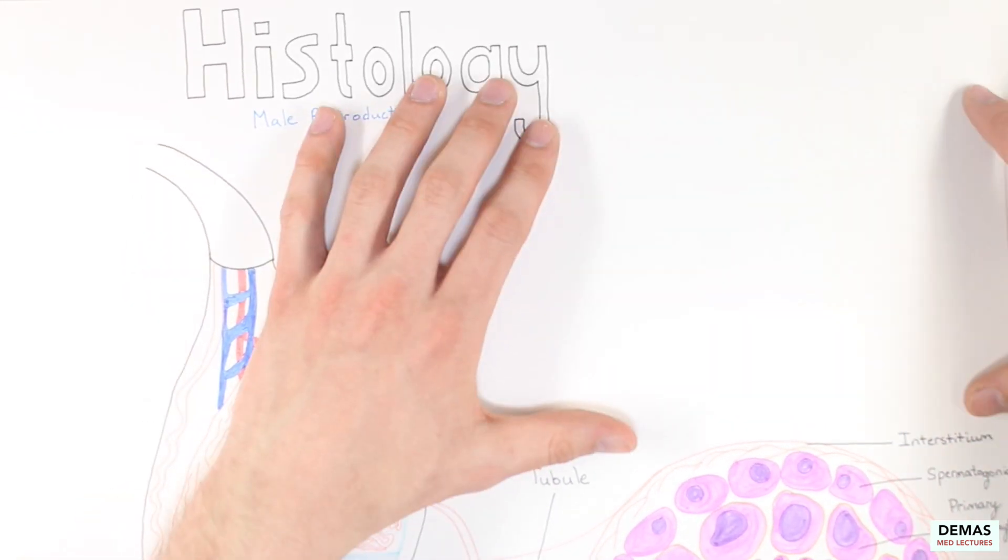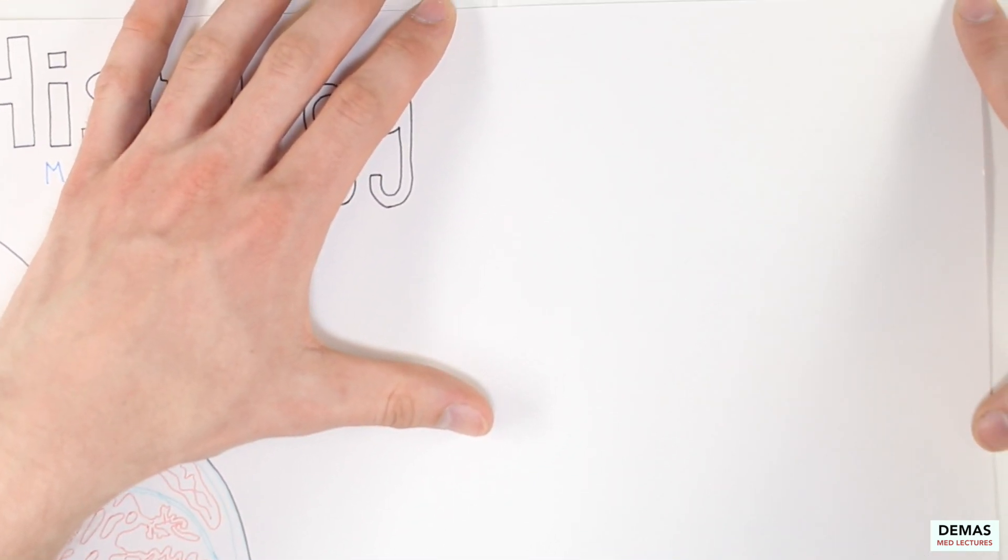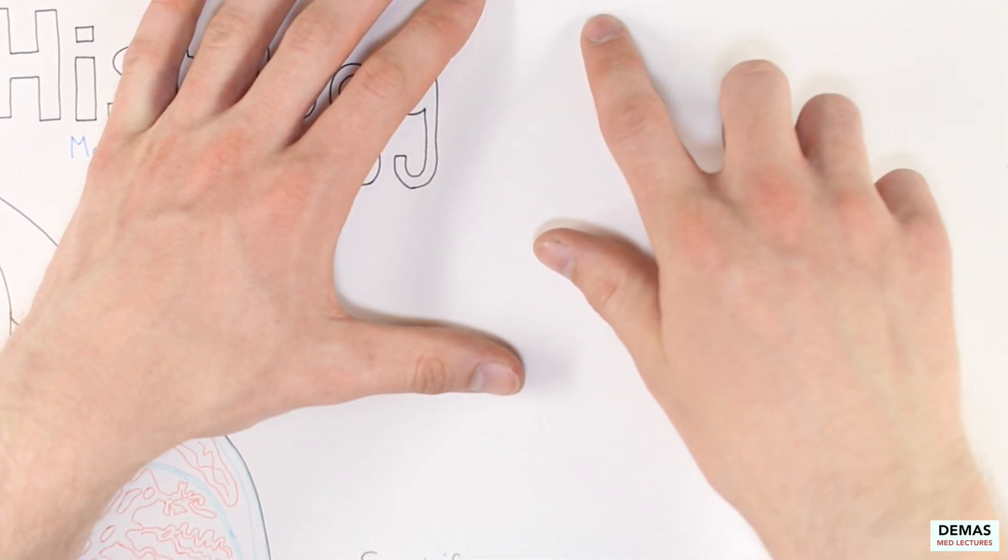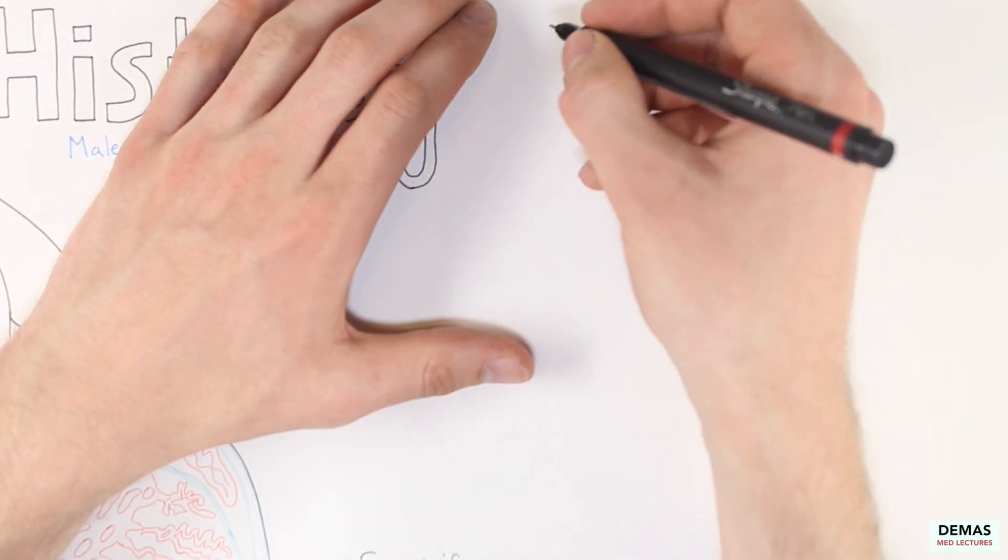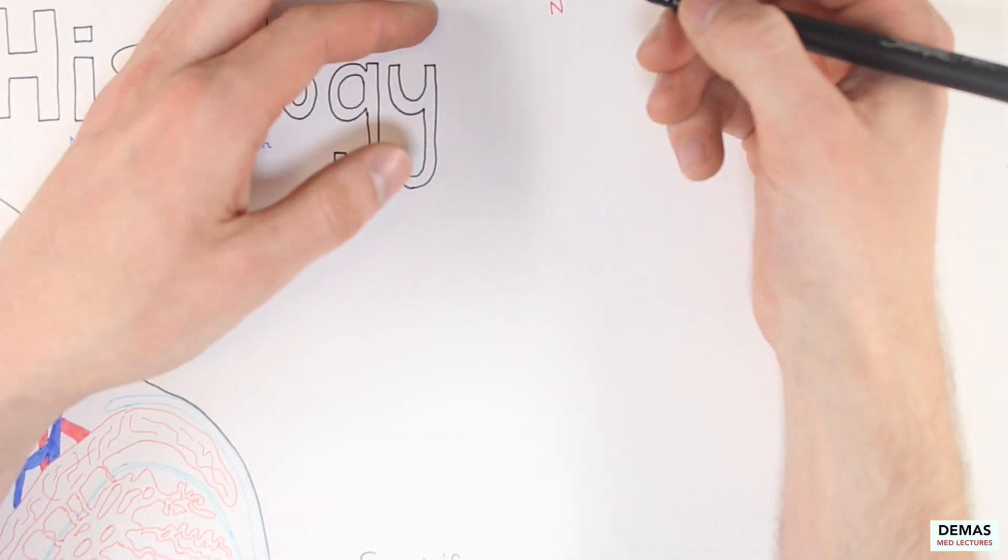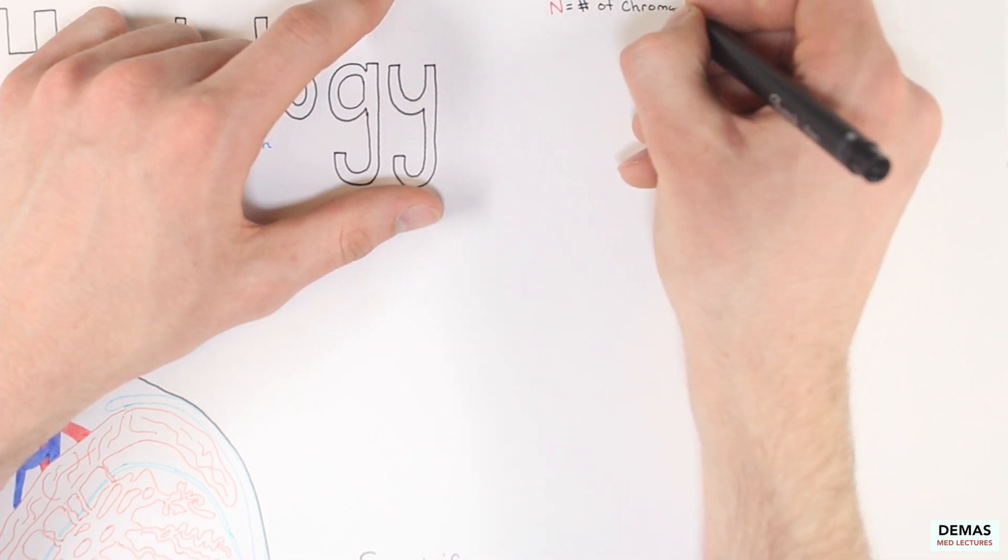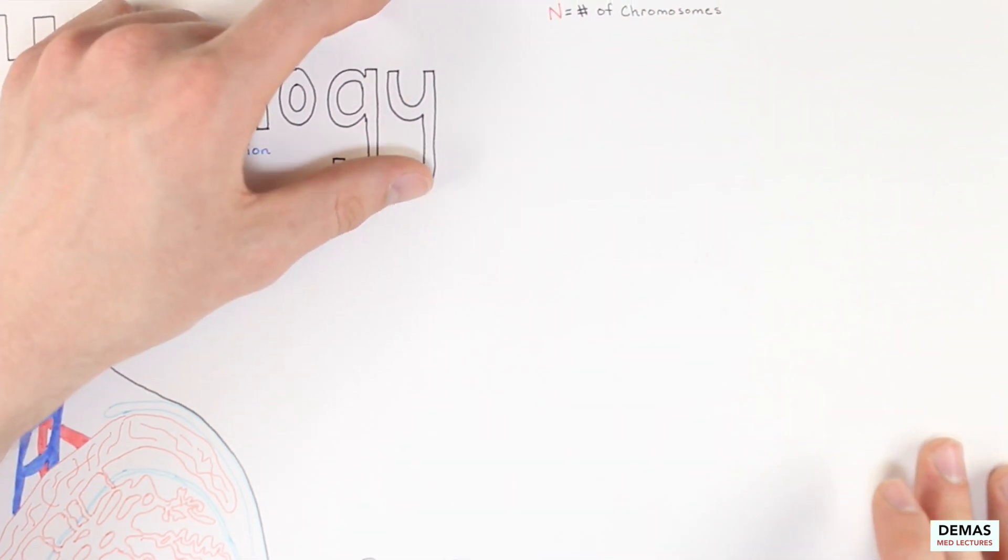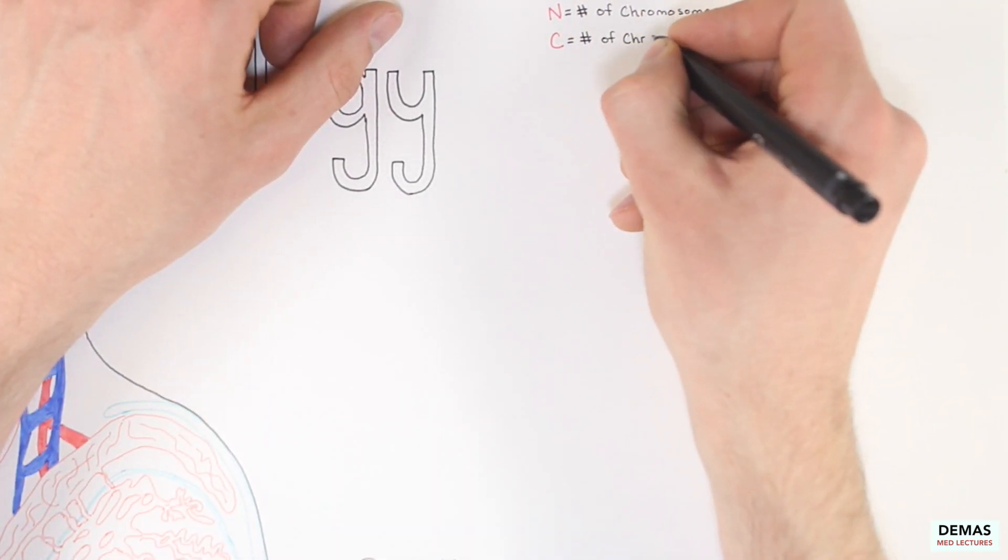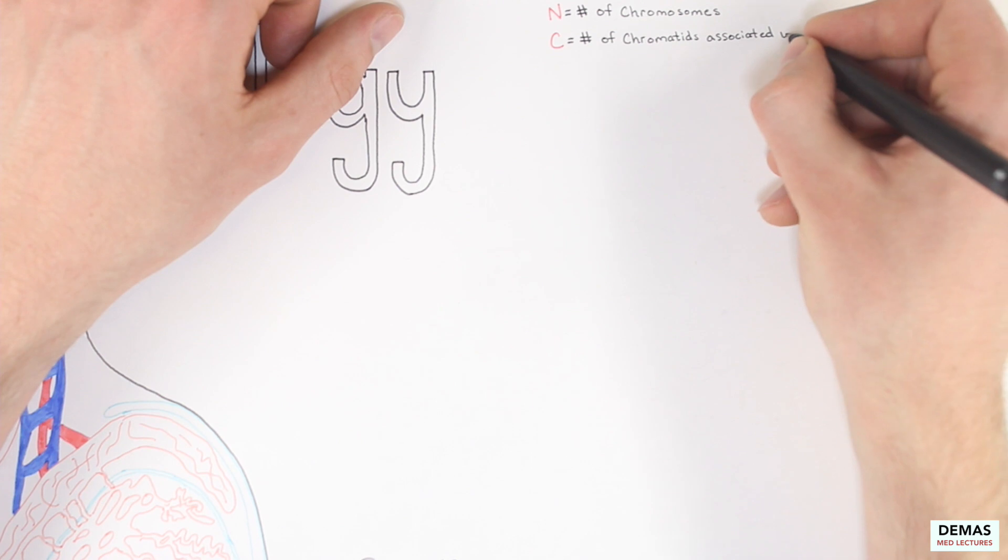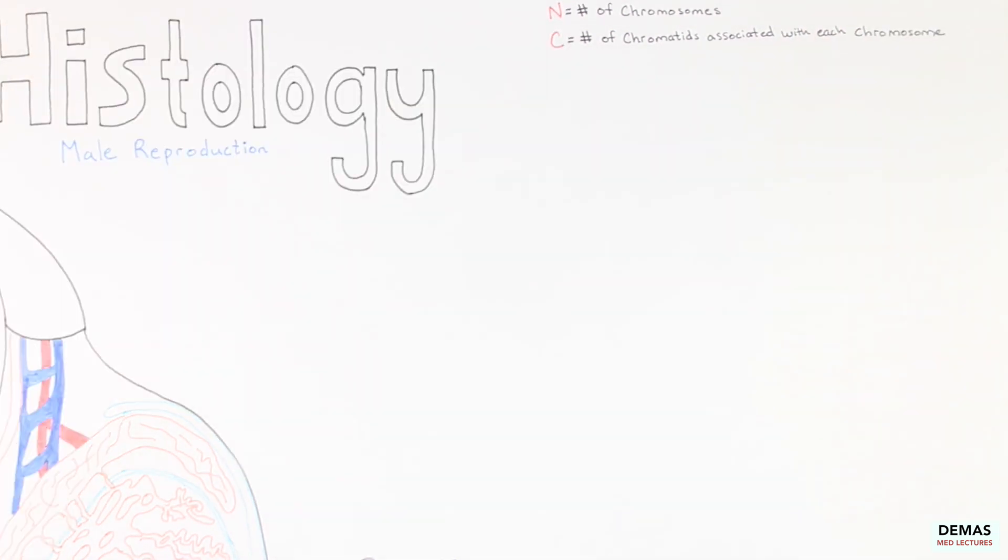Let's zoom in and take a closer look at this process, and I'll point out the most important points throughout the sperm maturation process that you should make sure you are familiar with. Just as in the female reproduction lecture, the genetic content of the developing haploid germ cell follows the N and C notation, where N stands for the number of chromosome sets, while C stands for the number of chromatids associated with each chromosome within the cell. We will continue to use that notation here.